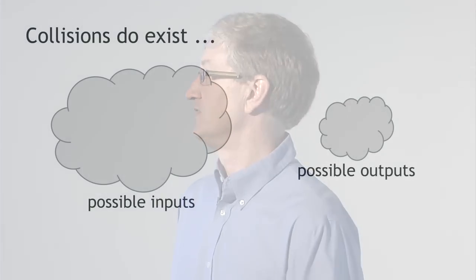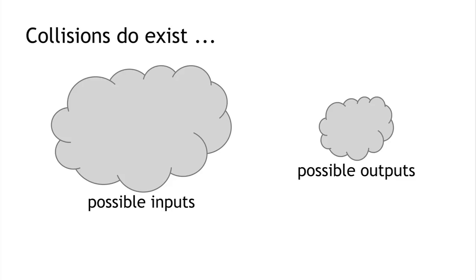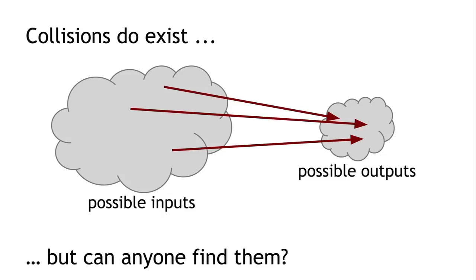To understand why collisions exist, consider that all possible inputs — strings of any size — must map to outputs that are only 256 bits in size, meaning only 2^256 possibilities. Since the input space is much larger, many inputs must map to the same output. So collisions do exist. The question is whether any collisions are findable by regular people using regular computers.